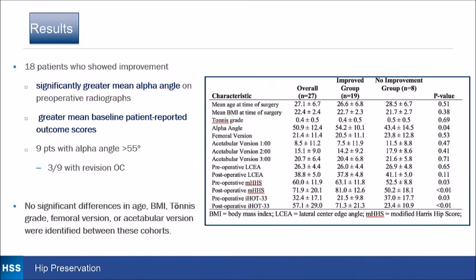In the 18 patients that showed improvement, there was a significantly greater mean alpha angle in that group, and only 3 of 9 underwent an osteochondroplasty, which did not appear to factor into the result. The mean baseline patient-reported outcome score was higher in the successful group, which has been published in the literature with other hip preservation procedures.